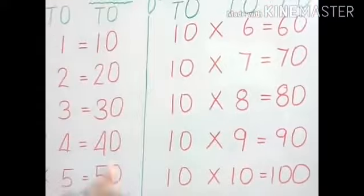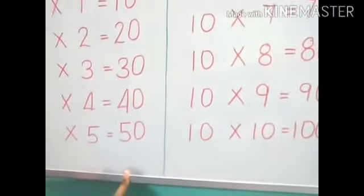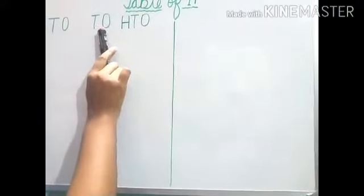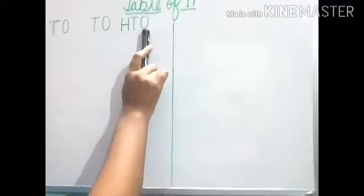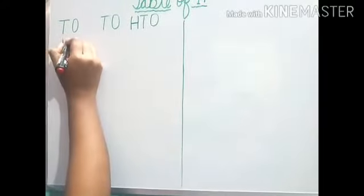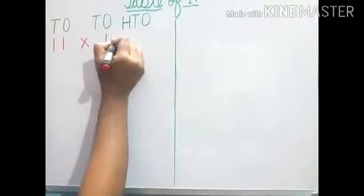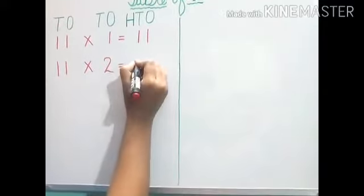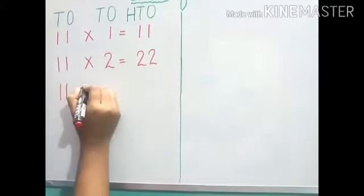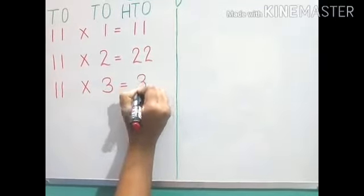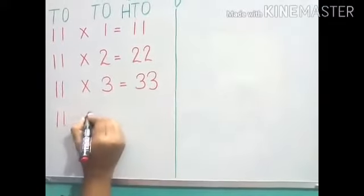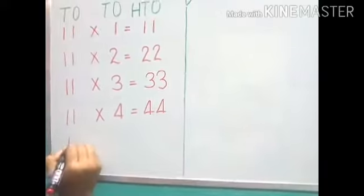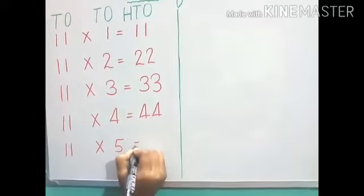Now, next table: table of 11. We will write 10s once, 10s once, and 100s, 10s once, because we are getting a three-digit number. So start. 11, 1s are 11. 11, 2s are 22. 11, 3s are 33. 11, 4s are 44. 11, 5s are 55.